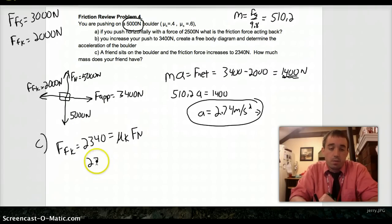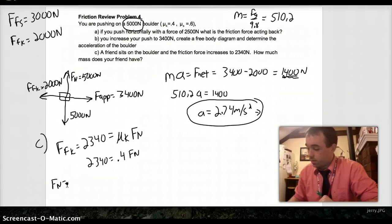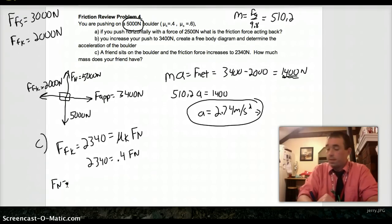So, my 2340 equals 0.4 times the normal force, which tells me that my normal force equals 2340 over 0.4, or 5850. So, my normal force is 5850.